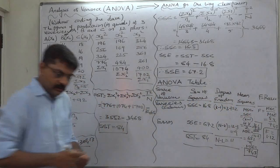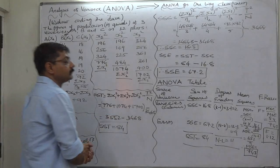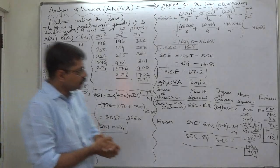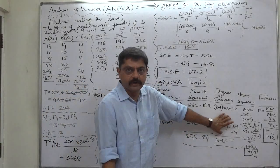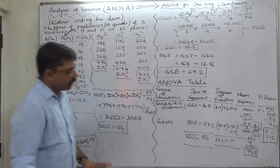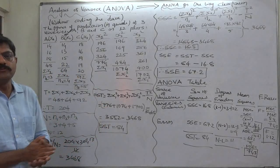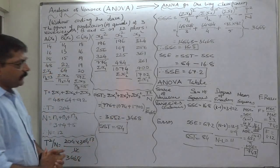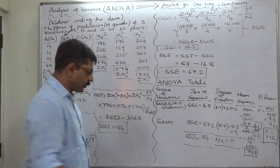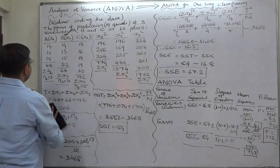That was the calculation part. Now we move forward for testing of hypothesis. To get the critical value we need degrees of freedom, which we have from the ANOVA table. The order of the procedure for testing a hypothesis is somewhat different in the case of ANOVA. We now go from null hypothesis to conclusion.